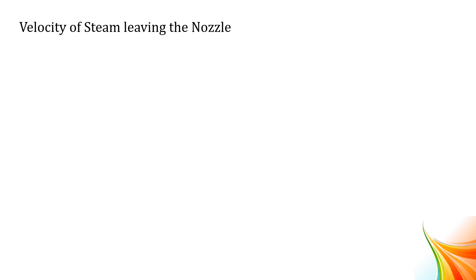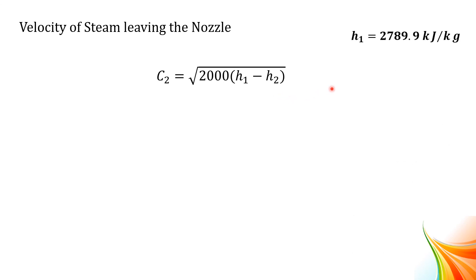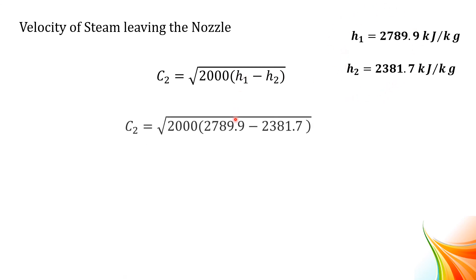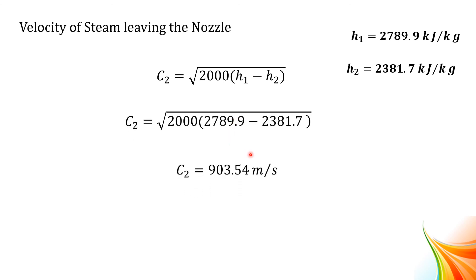The velocity of steam leaving the nozzle is C2 equal to square root of 2000 into (H1 minus H2). Substituting H1 equal to 2789.9 kJ/kg and H2 equal to 2381.7 kJ/kg, we get C2 equal to 903.54 meters per second.